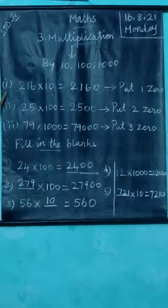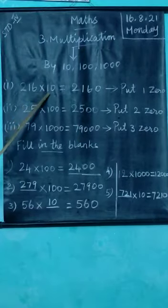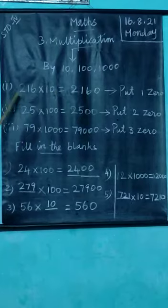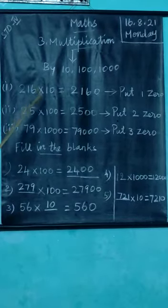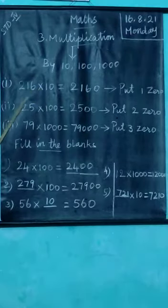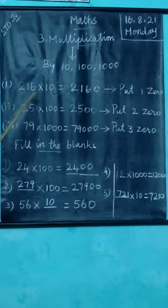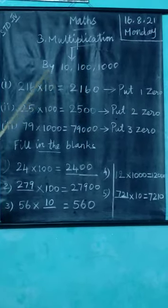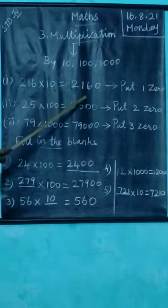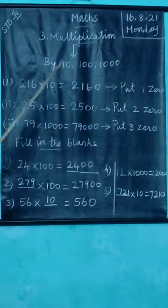See the first sum: 216 into 10. When a number is multiplied by 10, what do we do? To multiply a number by 10, put one zero to the right of the number.